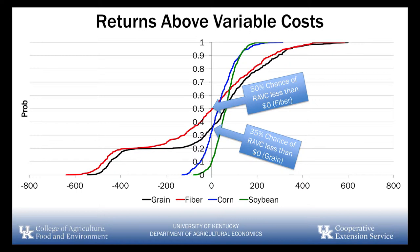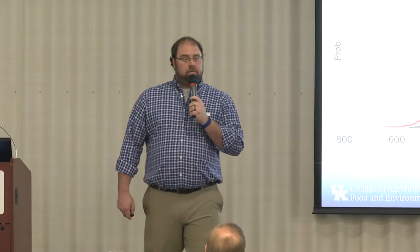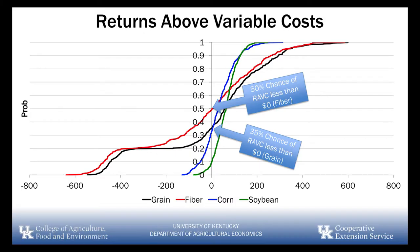According to my model, I'm looking at about a 50% chance of having a positive return above variable costs for fiber, and about a 65% chance of positive return on the grain side. Now, I know these are not the two main crops — CBD is the majority of production in the state. But these are the easier ones to get my hands wrapped around. Comparing those to corn and beans using 2018 numbers, you can see the returns are not nearly as variable in those markets.